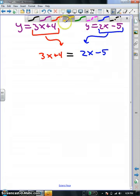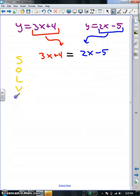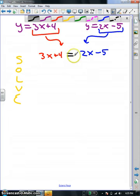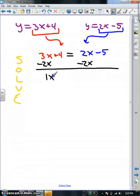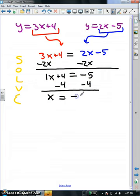And now solve. So I set my 3x plus 4 equal to my 2x minus 5. In order to solve it, I'm going to subtract 2x from both sides to get the x's together. 3x minus 2x is 1x plus 4 equals negative 5. You need to get the x by itself, so I'm going to subtract 4 from both sides. I get x equals negative 9.